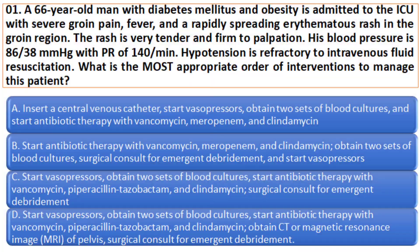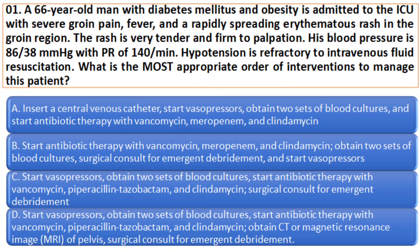Question 1. A 66-year-old man with diabetes mellitus and obesity is admitted to the ICU with severe groin pain, fever, and rapidly spreading erythematous rash in the groin region. The rash is very tender and firm to palpation. His blood pressure is 86 over 38 and pulse rate is 140. The hypotension is refractory to intravenous fluid resuscitation. What is the most appropriate order of interventions to manage this patient?